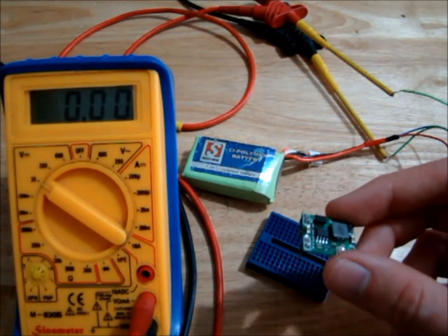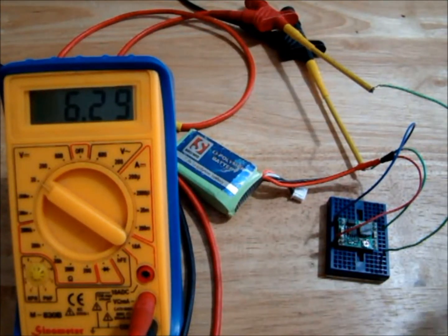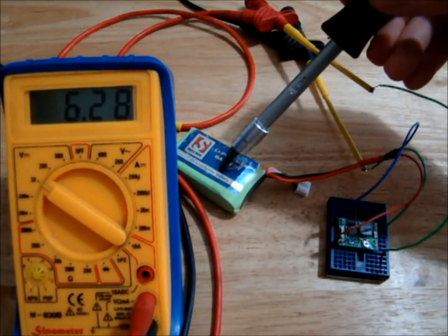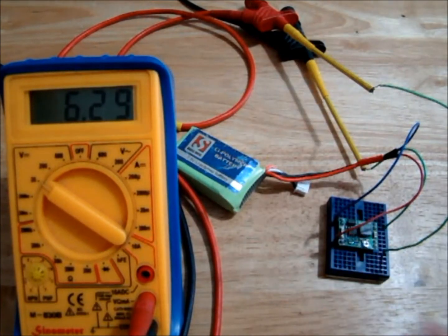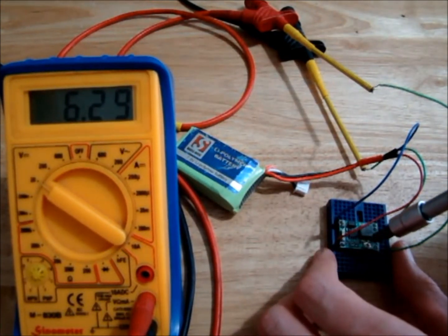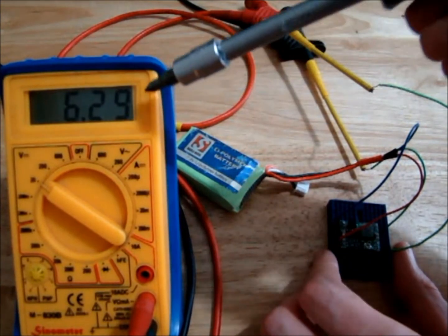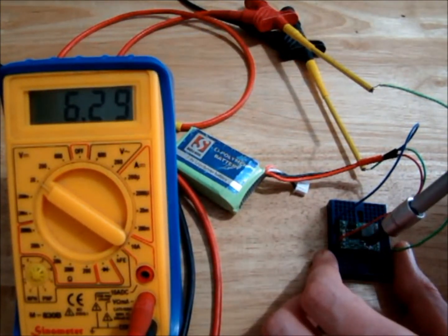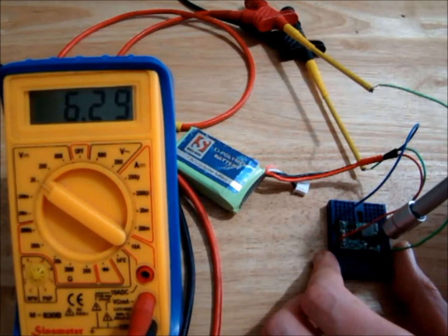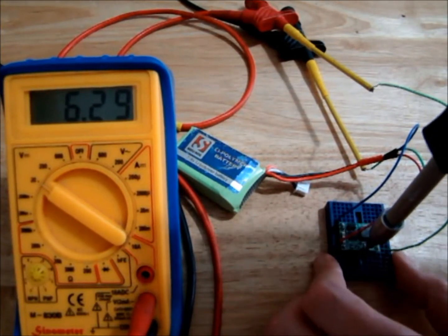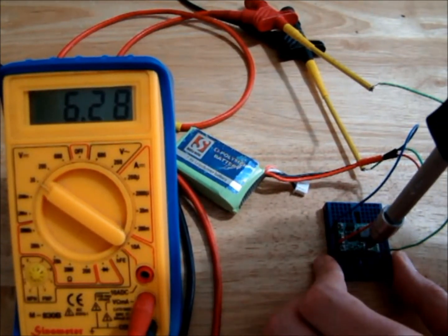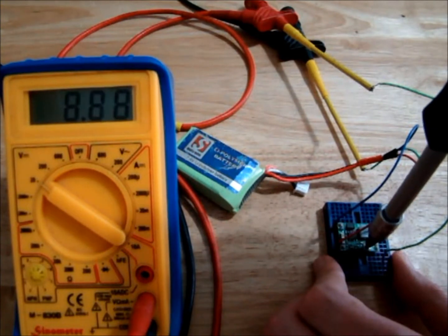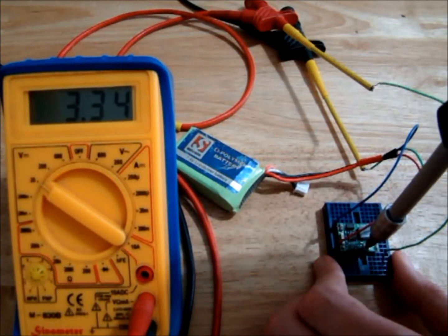Okay, so now I have my 7.4-volt battery connected to the regulator. And if we adjust our potentiometer we'll see - currently we're at 6.3 volts - so we'll see that voltage drop or possibly go up depending on which way I turn the potentiometer.